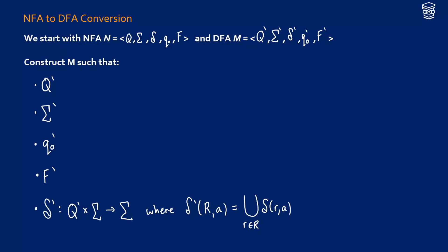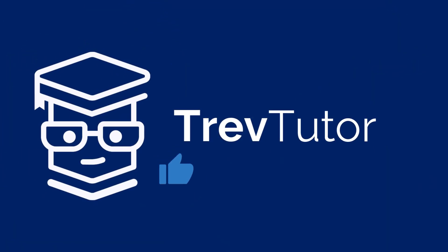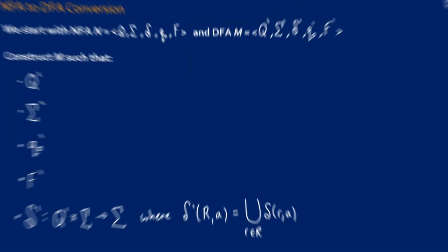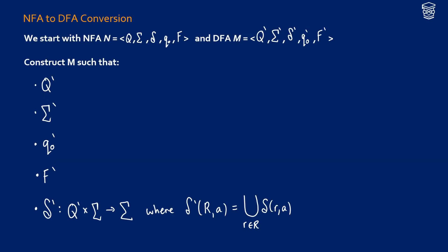Alright, let's talk about NFA to DFA conversion. So let's say we start with an NFA N with our states, alphabet, transition function, start state, and success states. And we want to create a DFA M where we have all of those things prime. We're going to be using this example to actually see what happens in the end, but we're going to go through notation first.